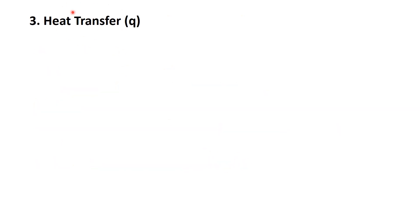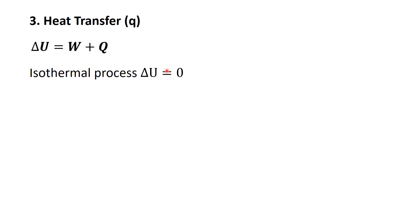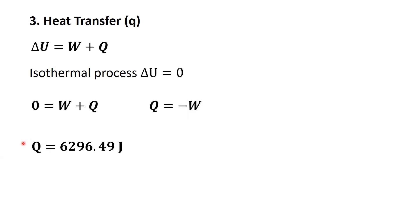Now let's determine the heat transfer during the reversible isothermal expansion. We'll use the first law of thermodynamics, which relates heat transfer, work done, and the change in internal energy. For an isothermal process, ΔU is 0, so the first law simplifies to 0 equals W plus Q, and rearranging gives Q equals minus W. The heat transferred to the system during the reversible isothermal expansion is approximately positive 6,296.46 joules. The positive sign indicates that heat is absorbed by the system.